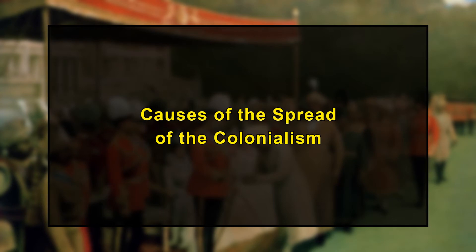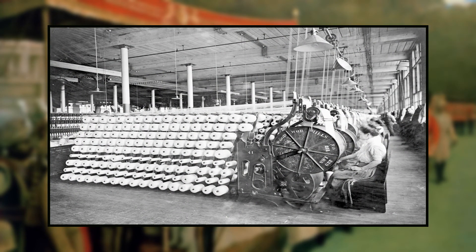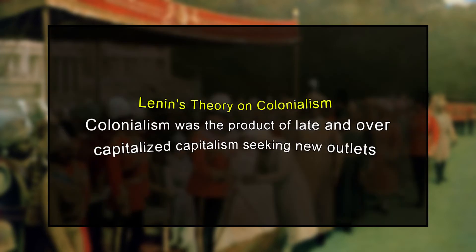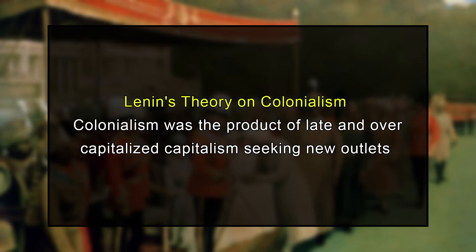Now let's look at the varied causes that led to the onslaught of modern colonialism. First, the Industrial Revolution is considered one of the main reasons for modern colonialism. It provided reason and funding for nations to pursue territorial expansion. With the establishment of new factories and industries, there was huge demand for cheap raw materials, cheap labor, and markets to sell finished products. Lenin's theory on colonialism also emphasized that colonialism was the product of late and over-capitalized capitalism seeking new outlets.